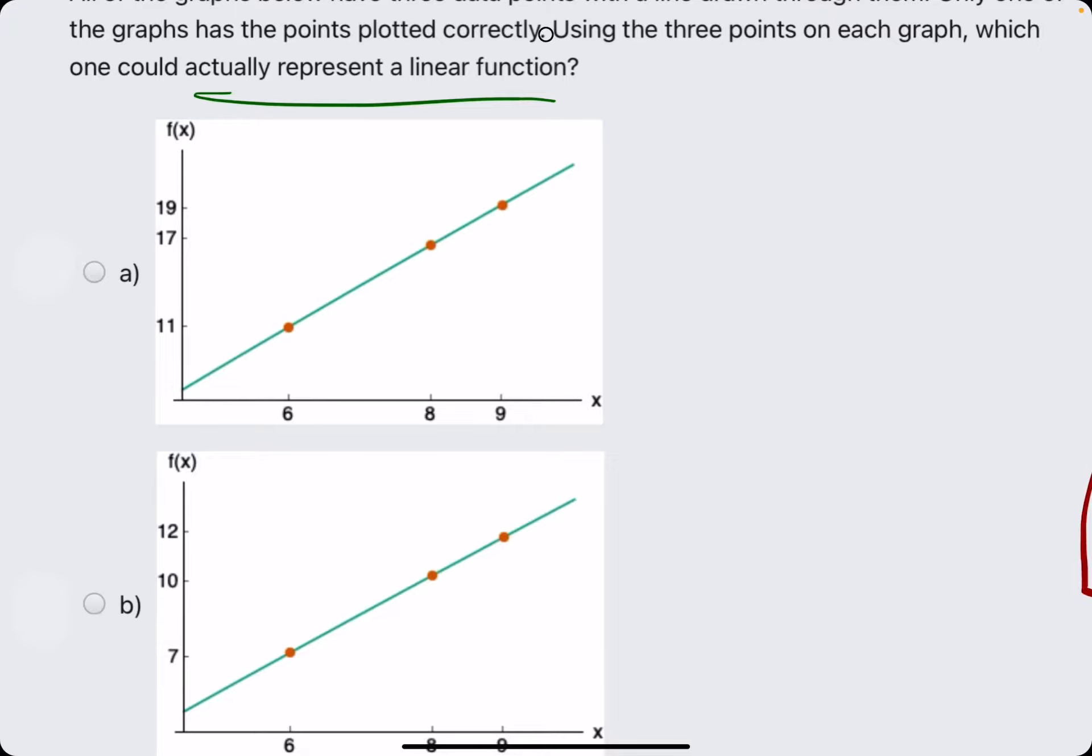So for example, between these two points, we have a rise from 11 to 17. So that's 6, and then it runs, if we look at our x-axis, 6 to 8. So it's going over 2. So rise over run would be 6 over 2, which would give us 3.